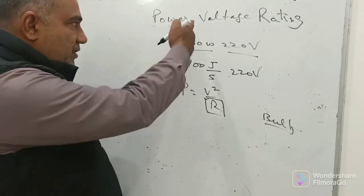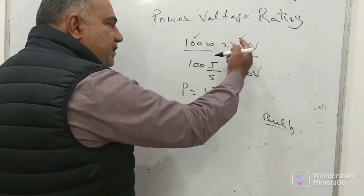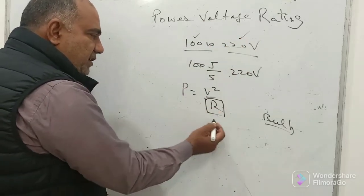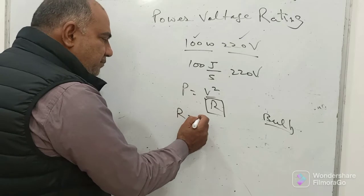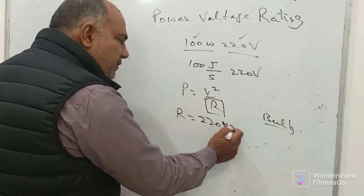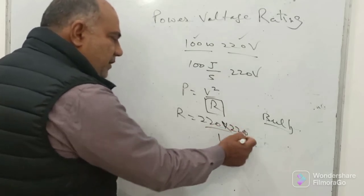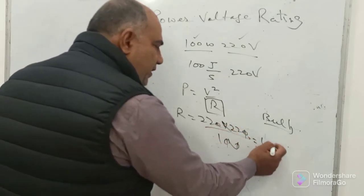Now by knowing 100 watt as power and 220 as the voltage, I will find out resistance. If I put R, it will become 220 volt into 220, I am leaving out the units, 220 times 220 upon 100. So this becomes 484 ohms.